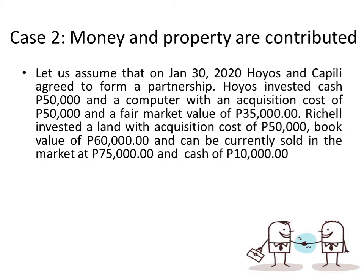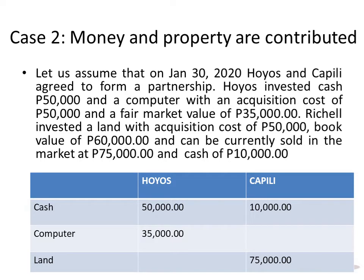For example, Kapili invested land with an acquisition cost of $50,000, a book value of $60,000, and currently sold in the market at $75,000. Take note that land is not depreciable, although it is subject to impairment from calamities like flooding. Mostly land accrues in value, which is why land is part of investment properties. Kapili also contributed cash $10,000. The land does not state a specific fair market value, but 'currently sold in the market' is the same as fair market value — $75,000.